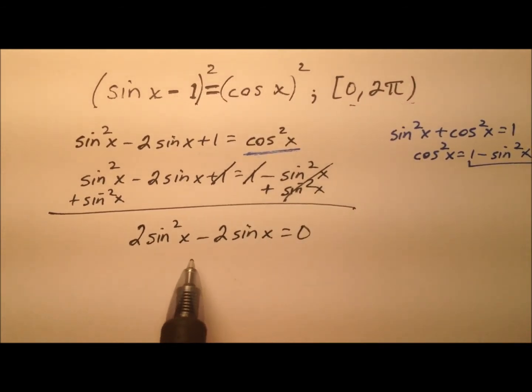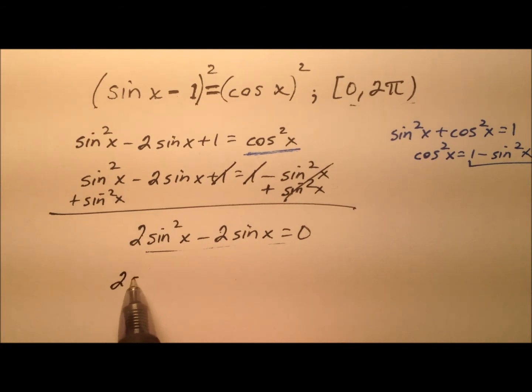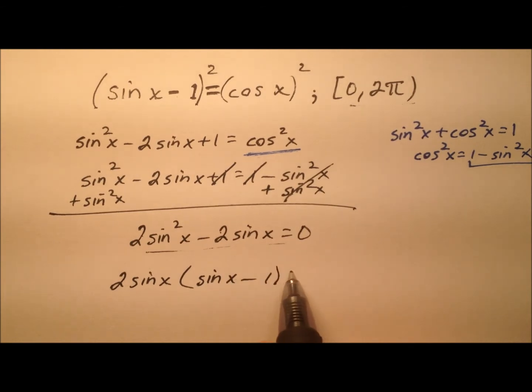Not bad at all. So only two terms here, let's go ahead and factor this using the greatest common factor. So it looks like both terms have a 2 and a sine x, so we'll go ahead and factor those out and what's left appears to be a sine x minus 1.